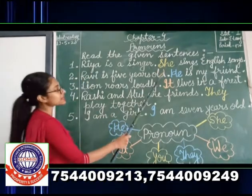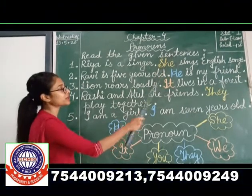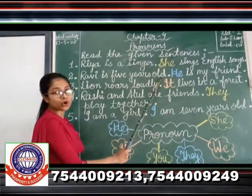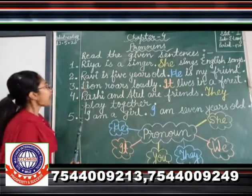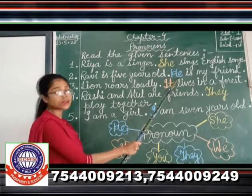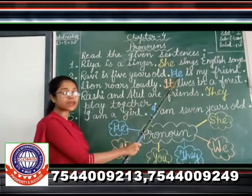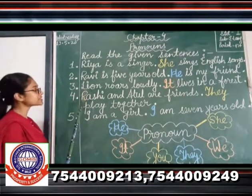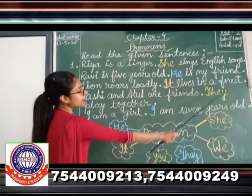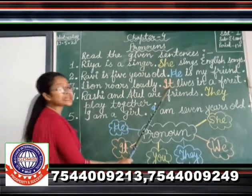Rhea ki jagah humne isi sentence mein kya use kiya hai? She. I have highlighted this word — 'she'. In the next sentence, Ravi is 5 years old. He is my friend. At the place of Ravi, we have used 'he'. Ravi is a noun, aur is noun ki jagah humne 'he' use kiya hai. In the next sentence, the lion roars loudly. It lives in a forest. In place of lion — lion is also a noun — we have used 'it'.